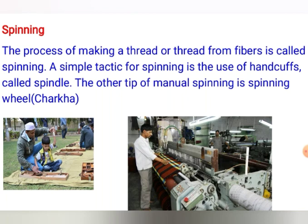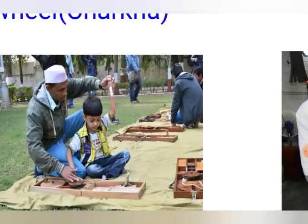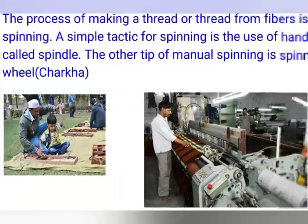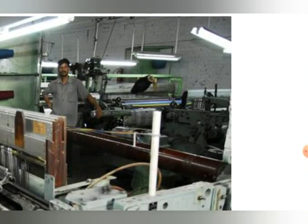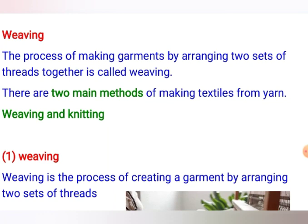The next topic is spinning. The process of making thread from fibers is called spinning. A simple technique for spinning is by using a hand tool called a spindle. Another tool for manual spinning is a spinning wheel known as a charkha. Spinning is also done with machines, which can very quickly spin cotton fibers or other fibers into thread.